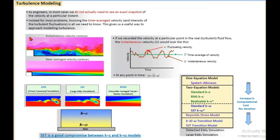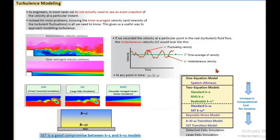In turbulence modeling, normally it calculates the fluctuation of velocity. When there is turbulent flow, there are continuous fluctuations of velocity. At any point, the velocity can be given by the average velocity plus a fluctuating term — that summation gives the instantaneous velocity. It is very difficult to calculate this fluctuation directly.